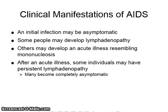Clinical manifestations of AIDS: An initial infection may be asymptomatic. Some people may develop lymphadenopathy. Others may develop an acute illness resembling mononucleosis. After an acute illness, some individuals may have persistent lymphadenopathy, while many become completely asymptomatic.